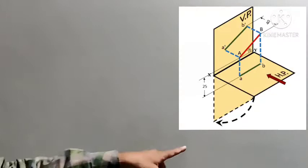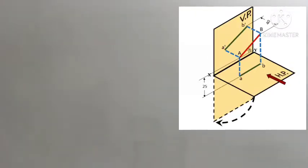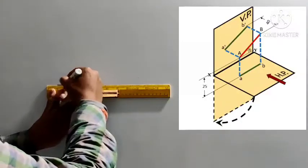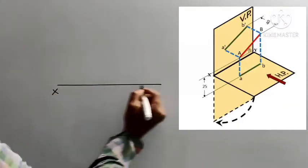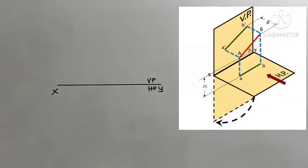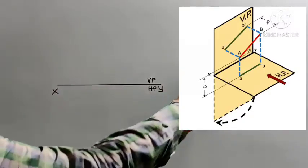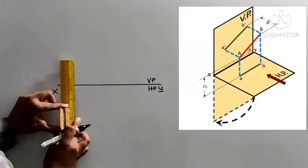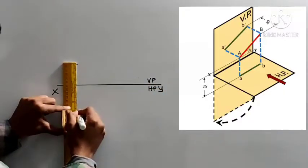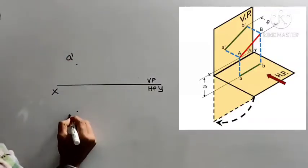This is the pictorial representation for this particular question. To convert this into an orthographic projection, we rotate the horizontal plane clockwise 90 degrees. Let me draw the reference line first. This is the XY reference line — this is my vertical plane and this is my horizontal plane. The name of the line is AB. For the front view, it will be A' B'. First, let's fix A'. A' is 25mm above HP, so from the reference line, mark 25mm. And the same A' is 40mm in front of VP — we will mark that. So this will be my A' in the front view and this will be my A in the top view.